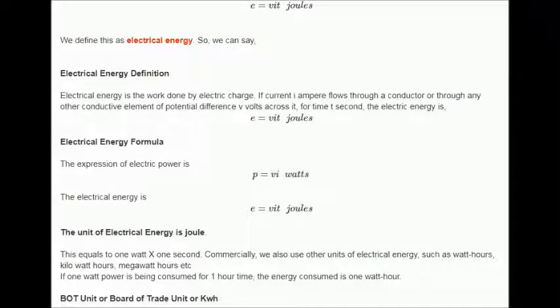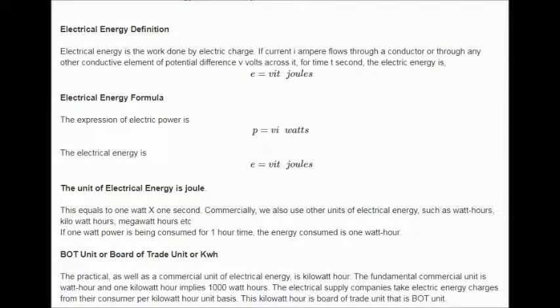If one watt power has been consumed for one hour time, the energy consumed is one watt-hour. BOT unit or board of trade unit or kWh: The practical, as well as a commercial unit of electrical energy, is kilowatt-hour. The fundamental commercial unit is watt-hour and one kilowatt-hour implies 1,000 watt-hours.